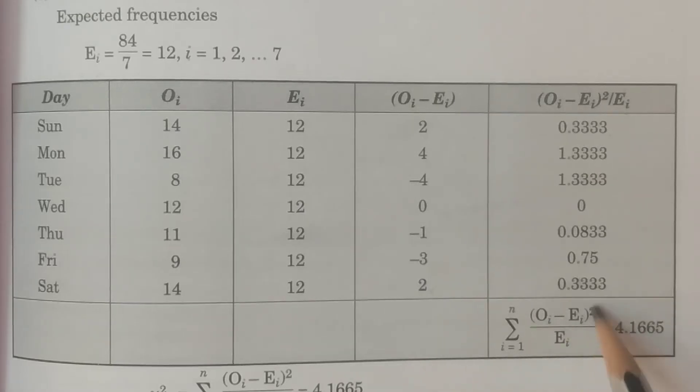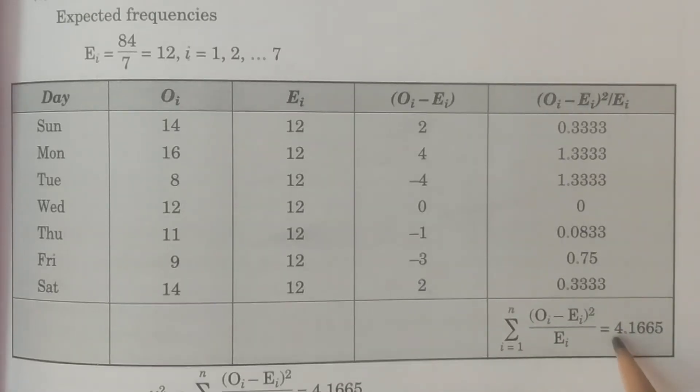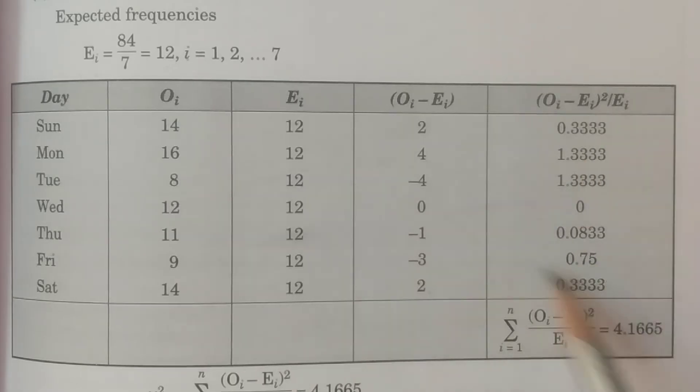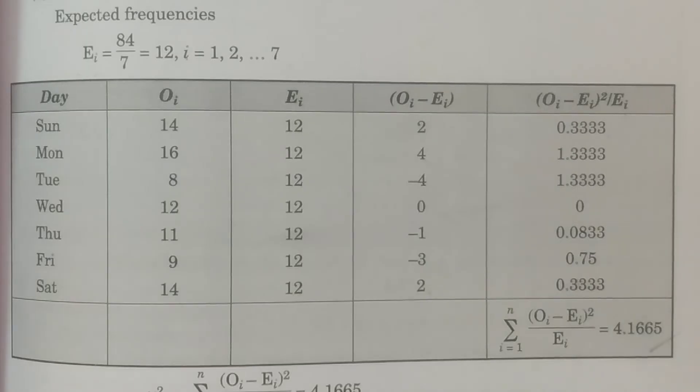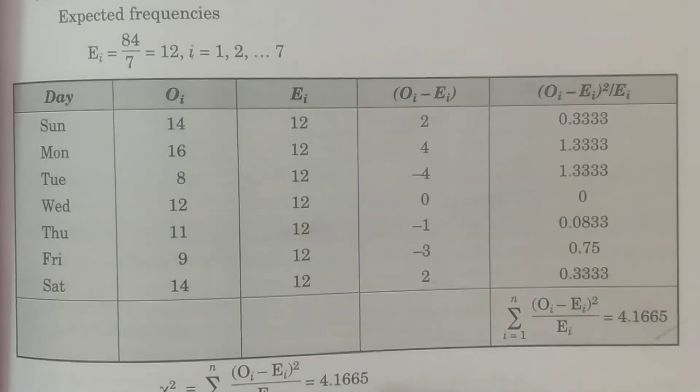Summation i is equal to 1 to n (Oi minus Ei) whole square by Ei is equal to this total of these values. That is 4.1665. You calculate the value. And that is nothing but our test statistic chi-square.